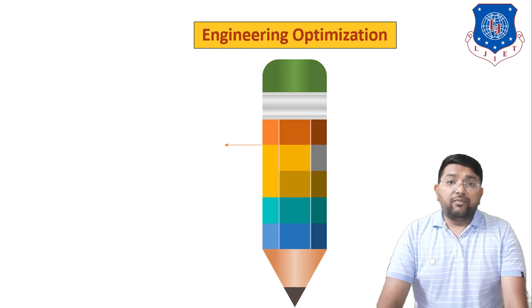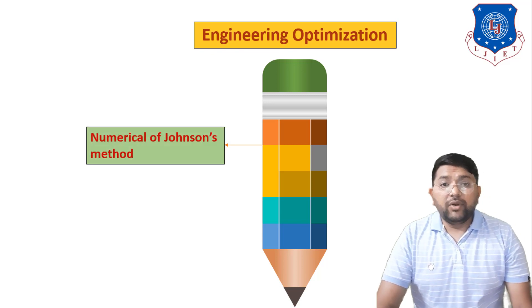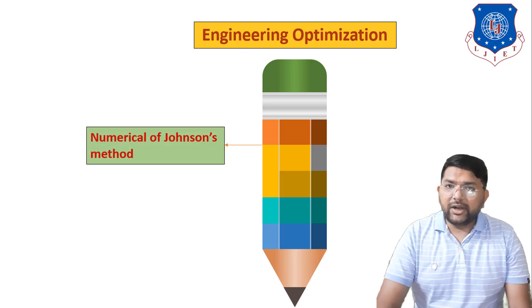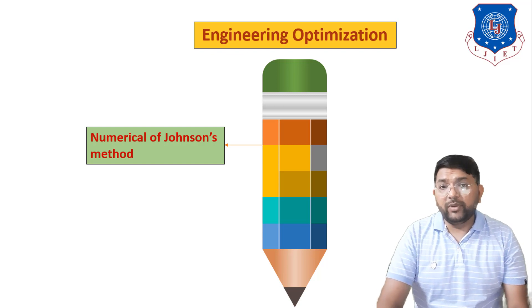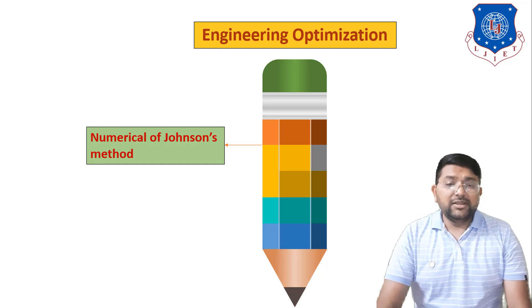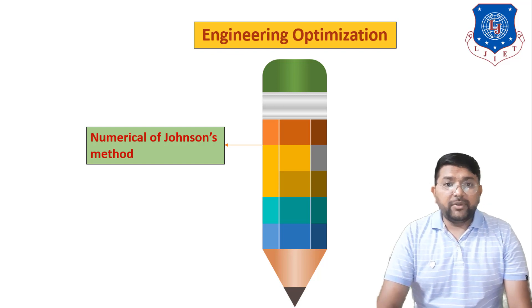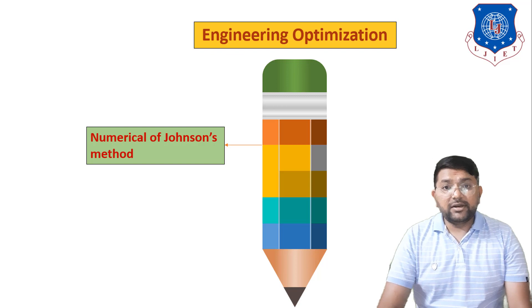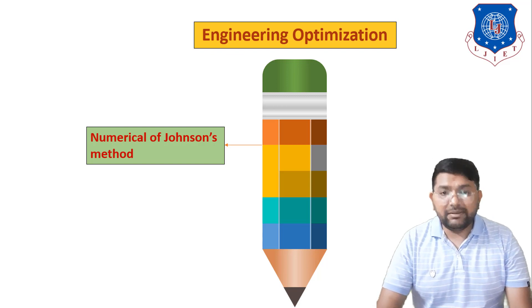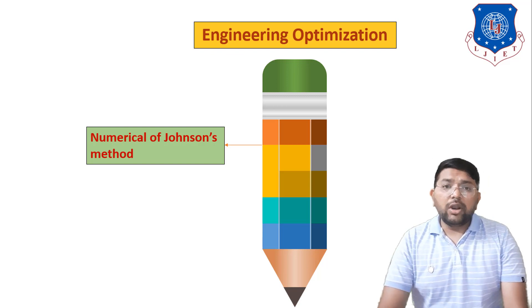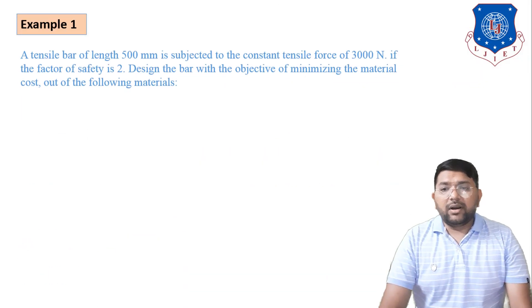In today's session we have to solve a numerical based on the Johnson method. In the previous lecture we already discussed how to solve any numerical using the Johnson method. For the Johnson method you need to know what is the preliminary design equation, what is the subsidiary design equation, and what is the limit equation. Based on these three equations we have to solve this numerical.